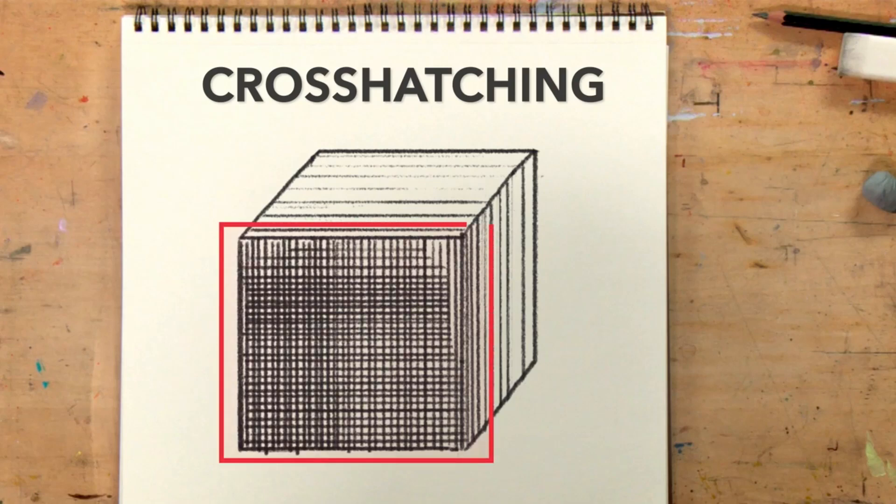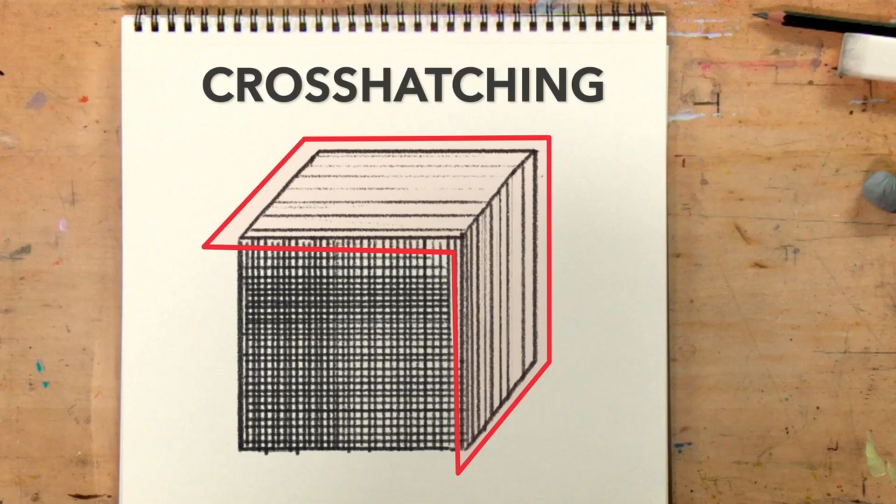The strokes defining the shading on an object are closer together and appear darker in the area where the tone should be more intense, and they appear farther apart where the lighter tones and highlights should be.